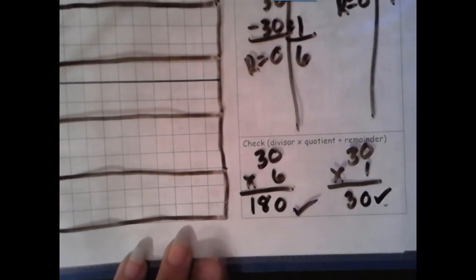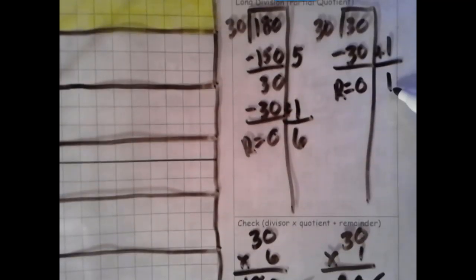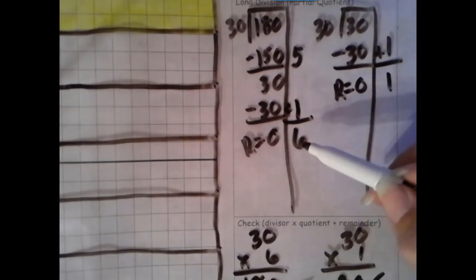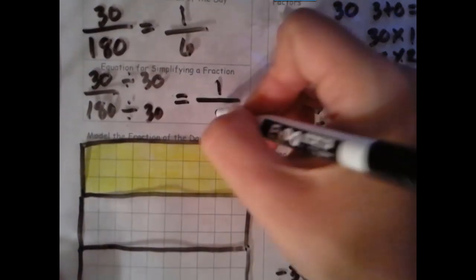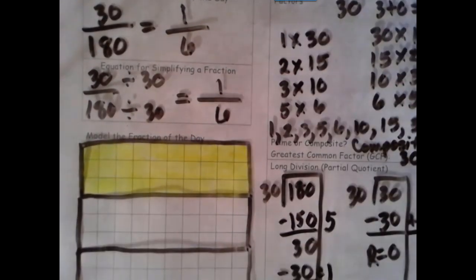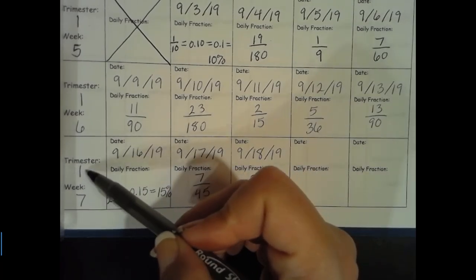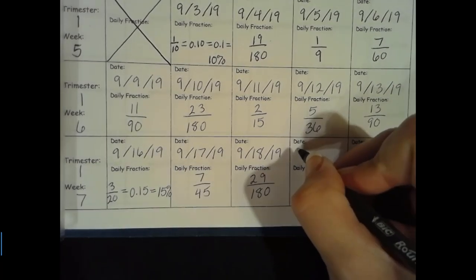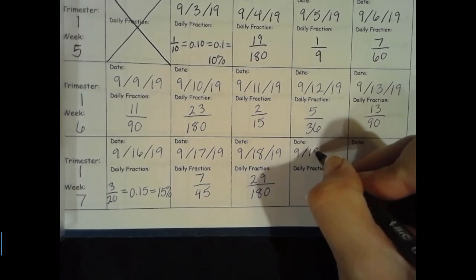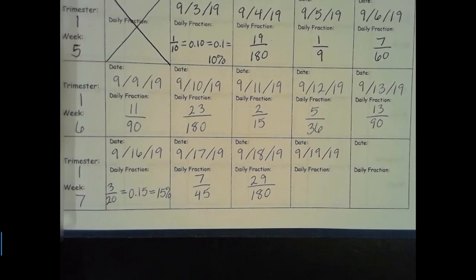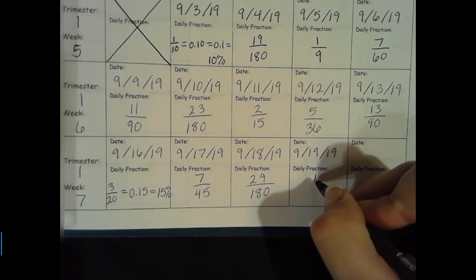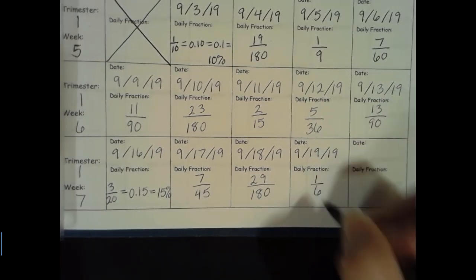That means that my numerator is definitely 1 and my denominator is definitely 6. So let's go ahead and fill in our data collection page. Trimester 1, week 7. Today is 9-19-19. Our fraction for today is 1/6.